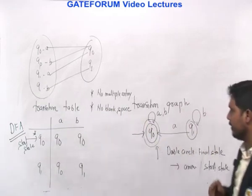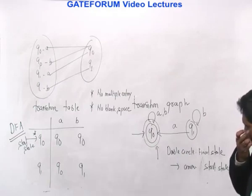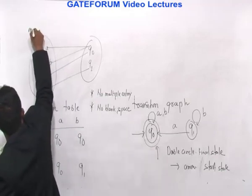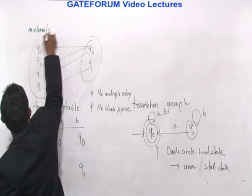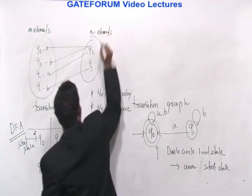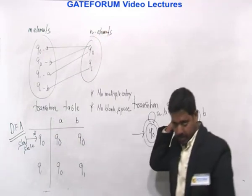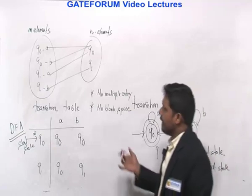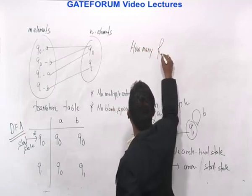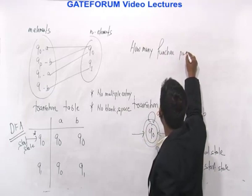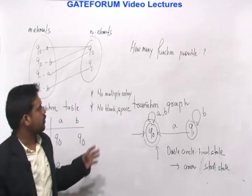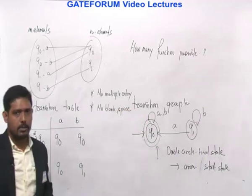This is a DFA. I will leave you with this small question: if the domain consists of M elements and the co-domain consists of N elements — this is a very common question asked in GATE examinations, like here with 4 and 2 — how many functions are possible? Take a break and try to answer this question.